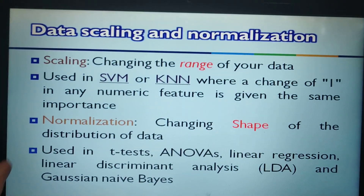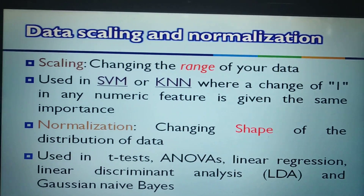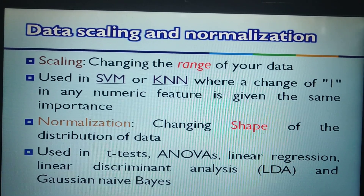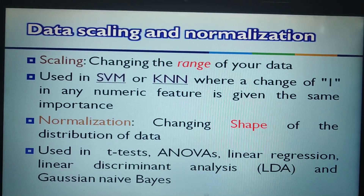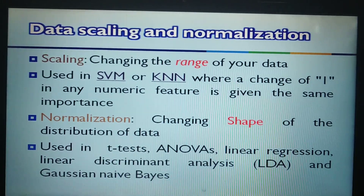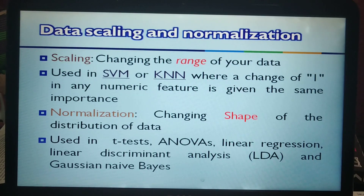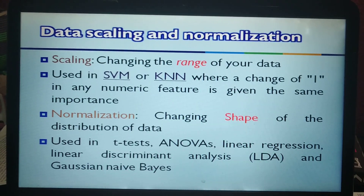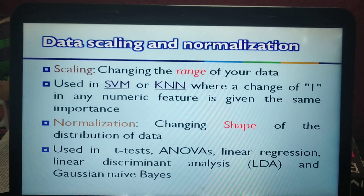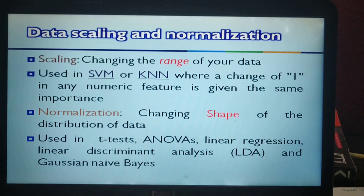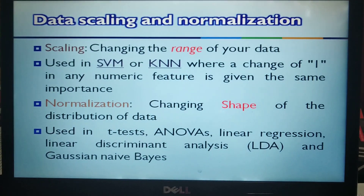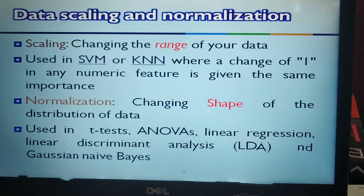That's why scaling is used in SVM and KNN — where a change of one in any numeric value is given the same importance. So whenever such equal importance needs to be given, we have to use scaling.